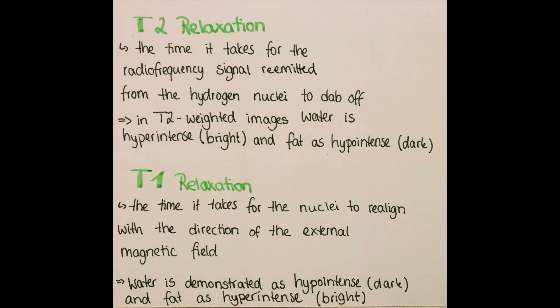The time it takes for the nuclei to re-align with the external magnetic field of the MRI is called T1 relaxation. These images typically demonstrate water as hypo-intense, so dark, and fat will be hyper-intense, as bright. So this is opposite for the T2-weighted images.